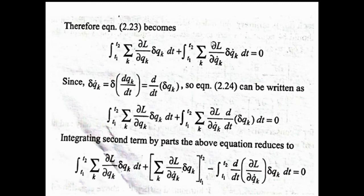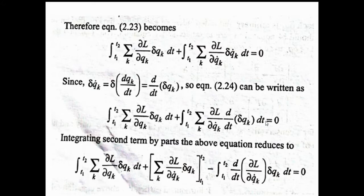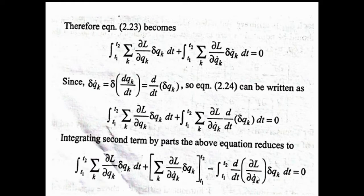After applying Hamilton's principle, we substitute the values. In the second term — which is the product of (curly L / curly q_k-dot) and delta q_k-dot — we note that q_k-dot means d/dt of delta q_k. So delta q_k-dot can be written as d/dt of delta q_k. Keeping the first term as is, we integrate the second term by parts: the result is the first factor times the integral of the second, minus the integral of the derivative of the first factor times the integral of the second.